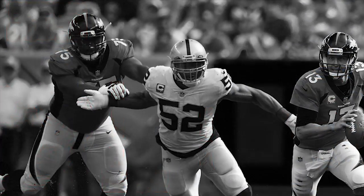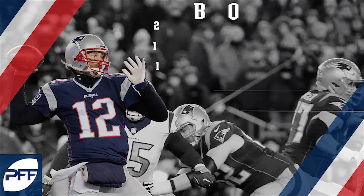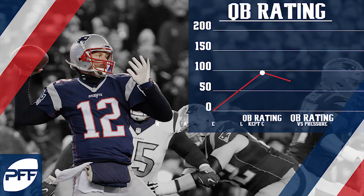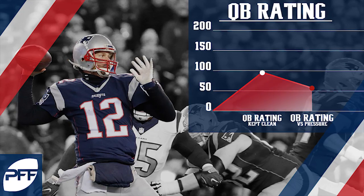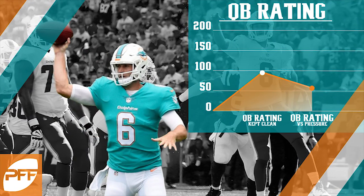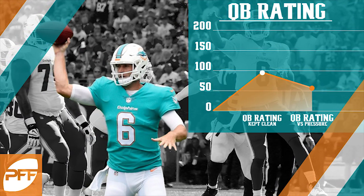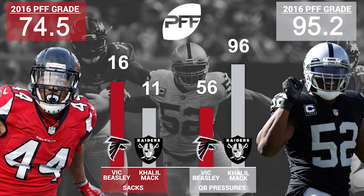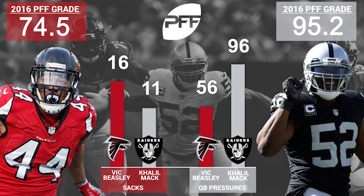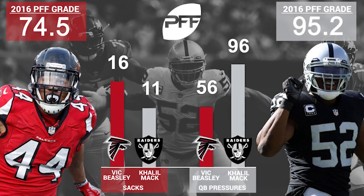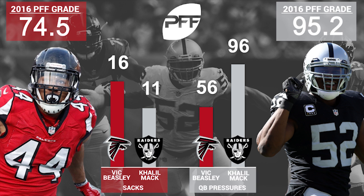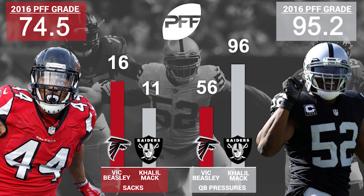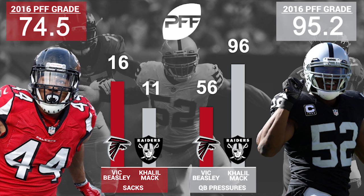Hits and hurries combined with sacks offer a far more complete picture of total pressure generated. Pressure beyond sacks is important in its own right — just pressuring the quarterback sees an average drop in passer rating of 32 points, effectively turning Tom Brady into Jay Cutler just by hurrying him in the pocket. Beasley led the league in sacks but was 18th even just among edge rushers when it comes to total pressures. When we used analytics to find out how valuable pressures were compared to sacks in expected points added terms...